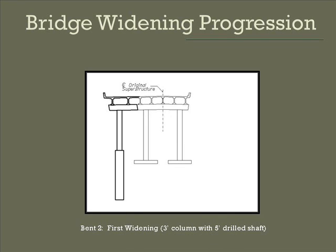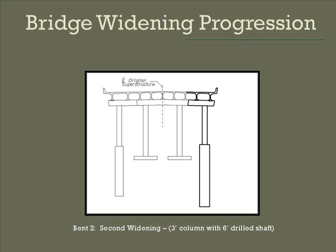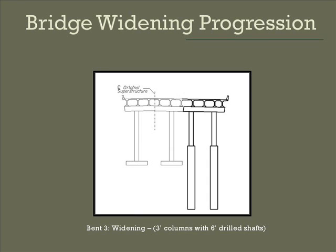The first addition to the bridge was made in the early 1990s, showing a 3-foot diameter column going into a 5-foot drilled shaft. The final widening of the structure took place in the late 1990s, with a 3-foot diameter column extending into a 6-foot drilled shaft. While the last three views were of the northbound structure, the southbound structure underwent one widening sequence with 3-foot diameter columns extending into 5-foot drilled shafts.